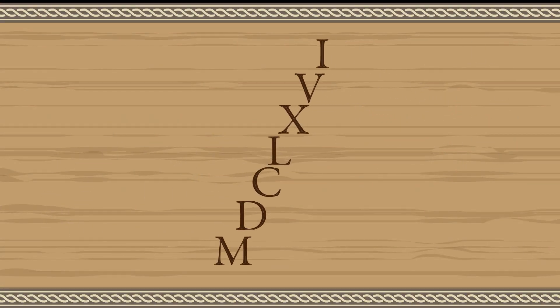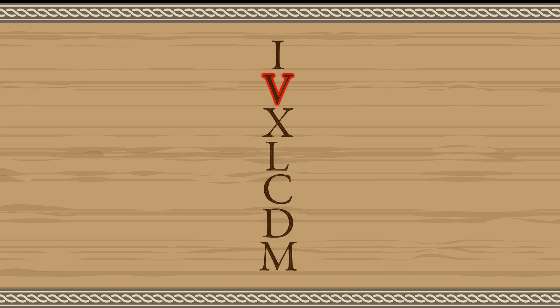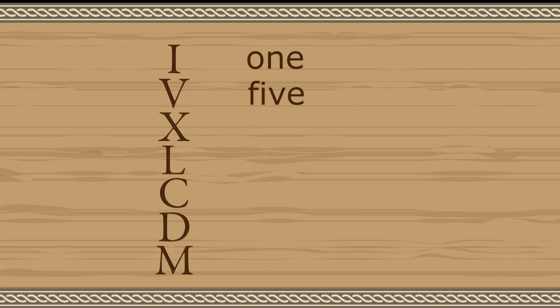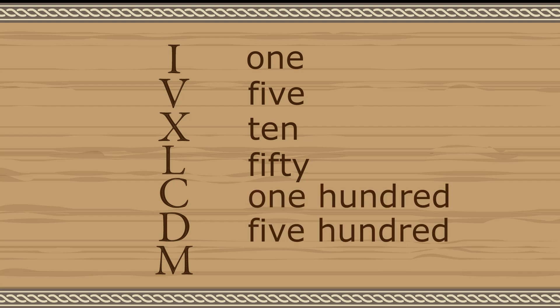In the Roman system, the symbols I, V, X, L, C, D, and M represent the quantities 1, 5, 10, 50, 100, 500, and 1000.